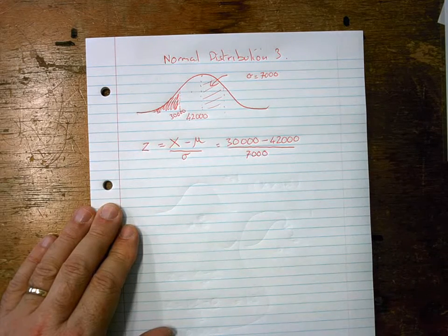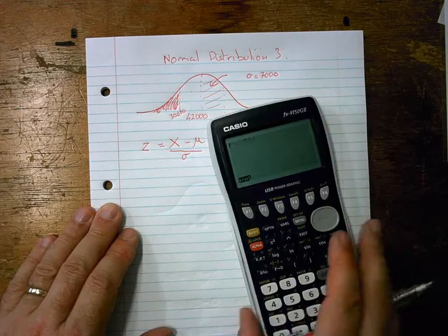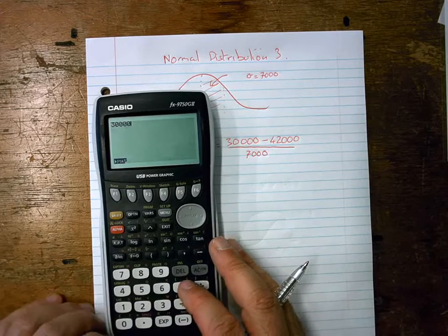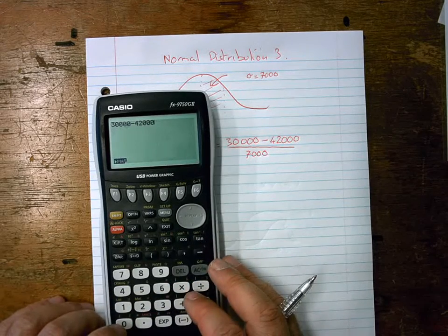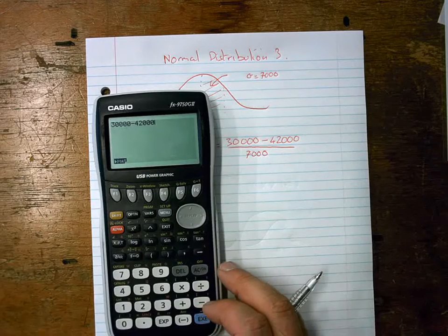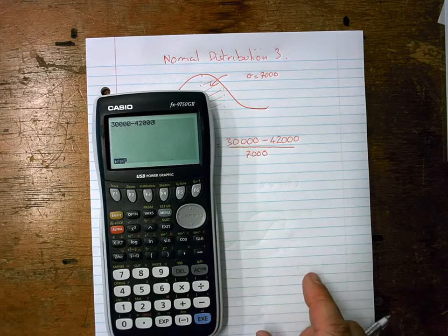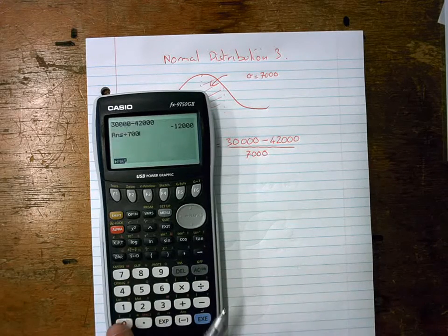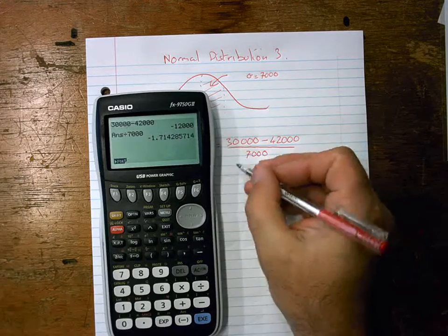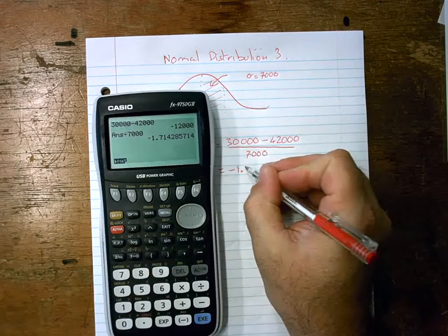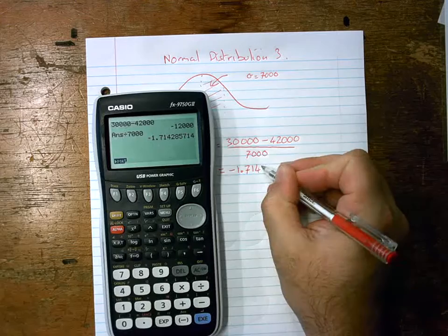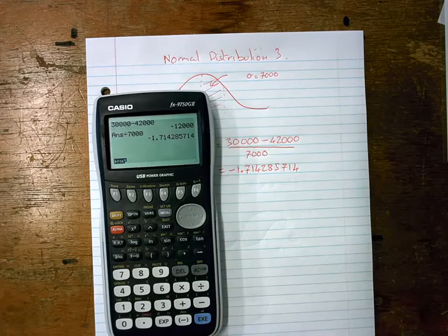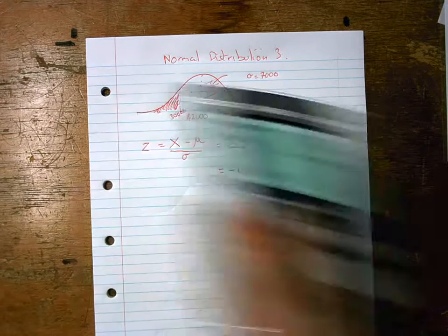At this point I get my calculator out and type in exactly that. So 30,000 take away 42,000 - be careful, if I write divided by right now it'll be wrong, so I'm going to have to press execute first, then divide that by 7,000. And I get an answer that says negative 1.71428571. I've written the whole thing down.